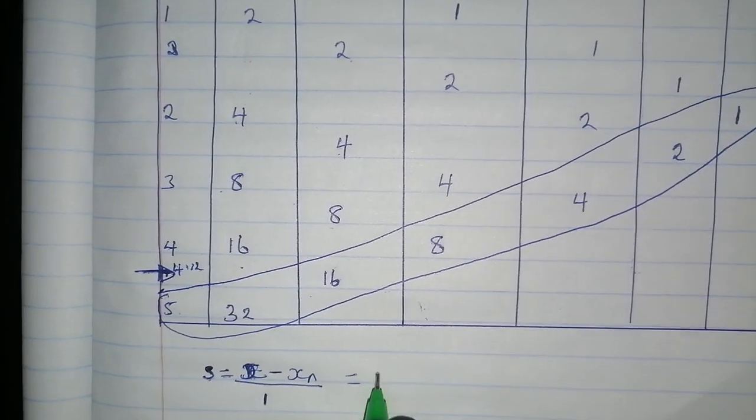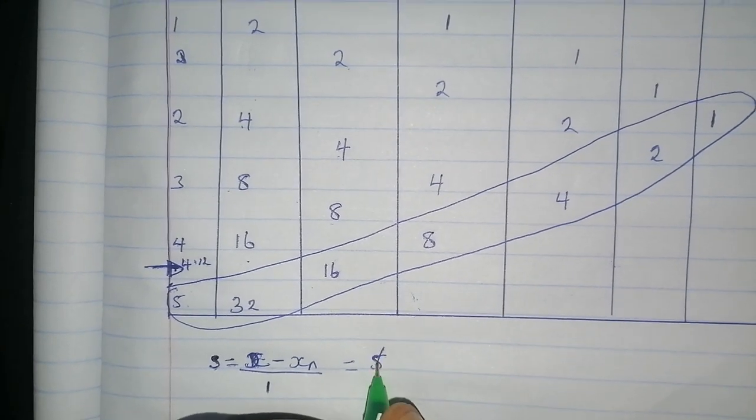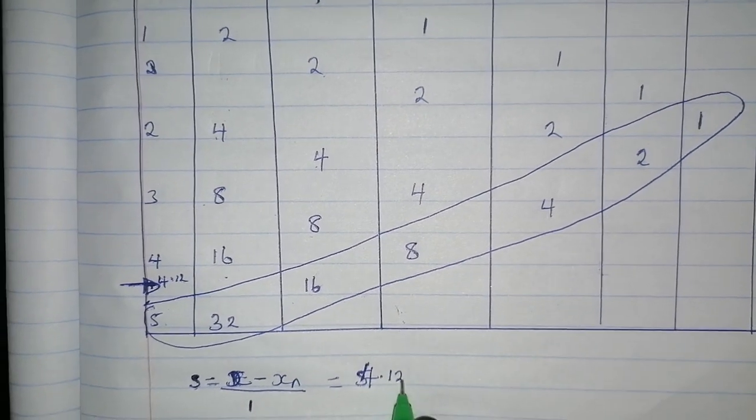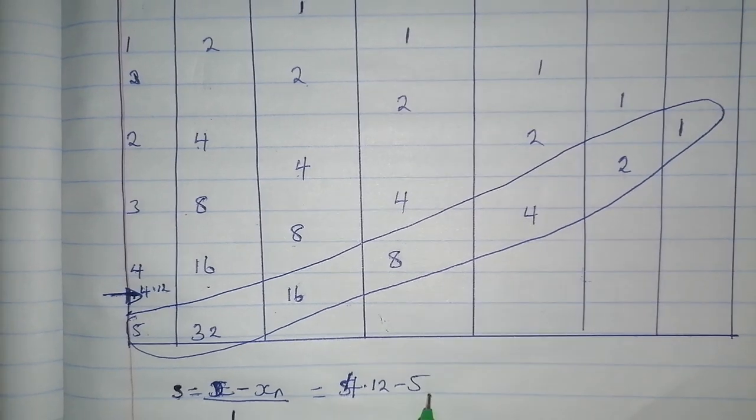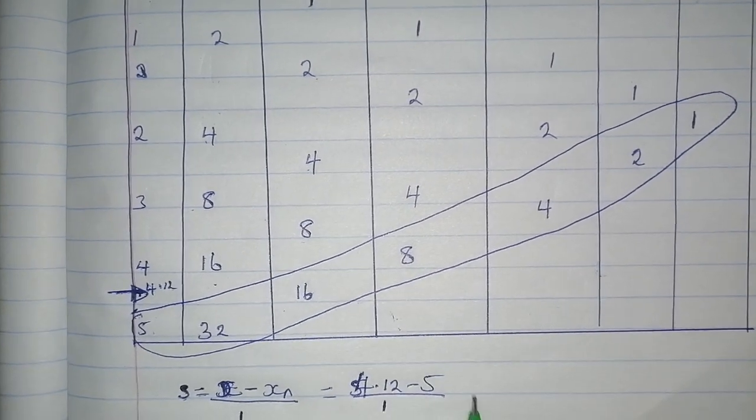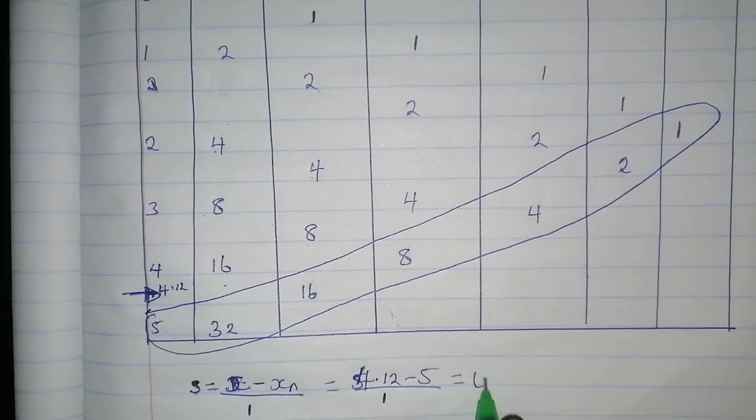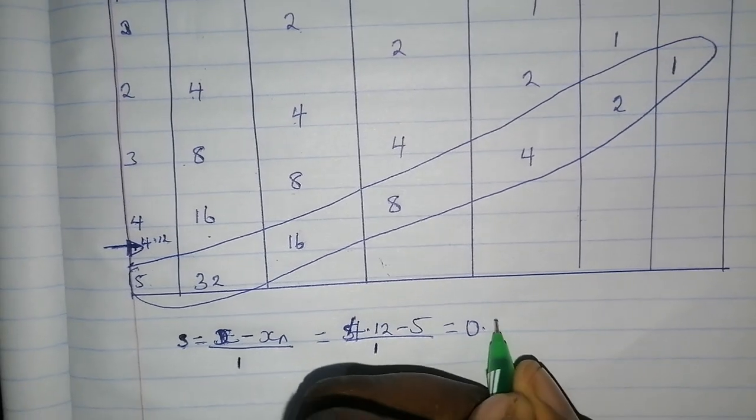It will be 4.12 minus 5 divided by 1, which equals negative 0.88.